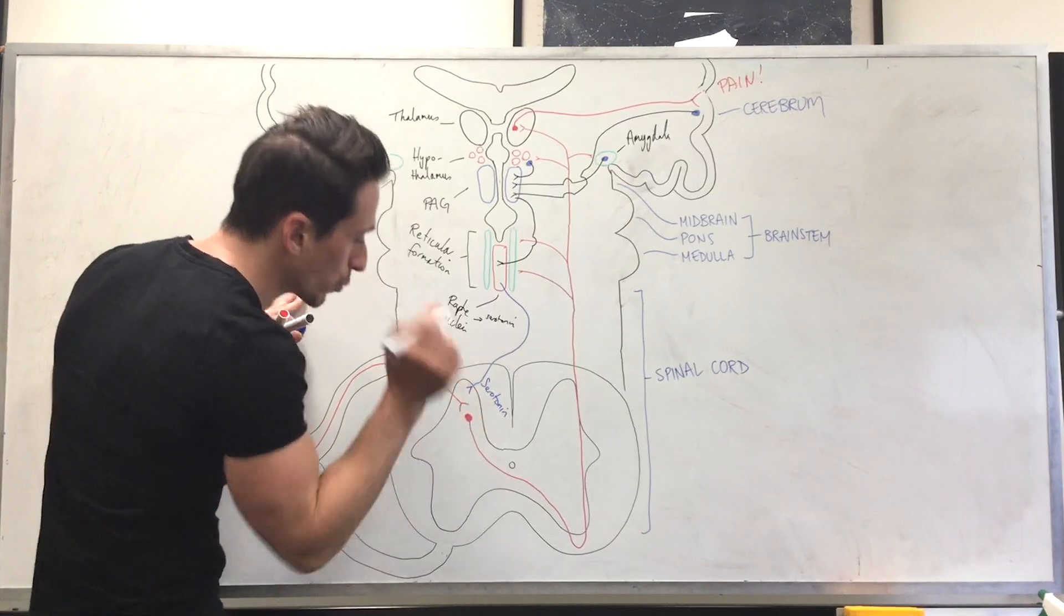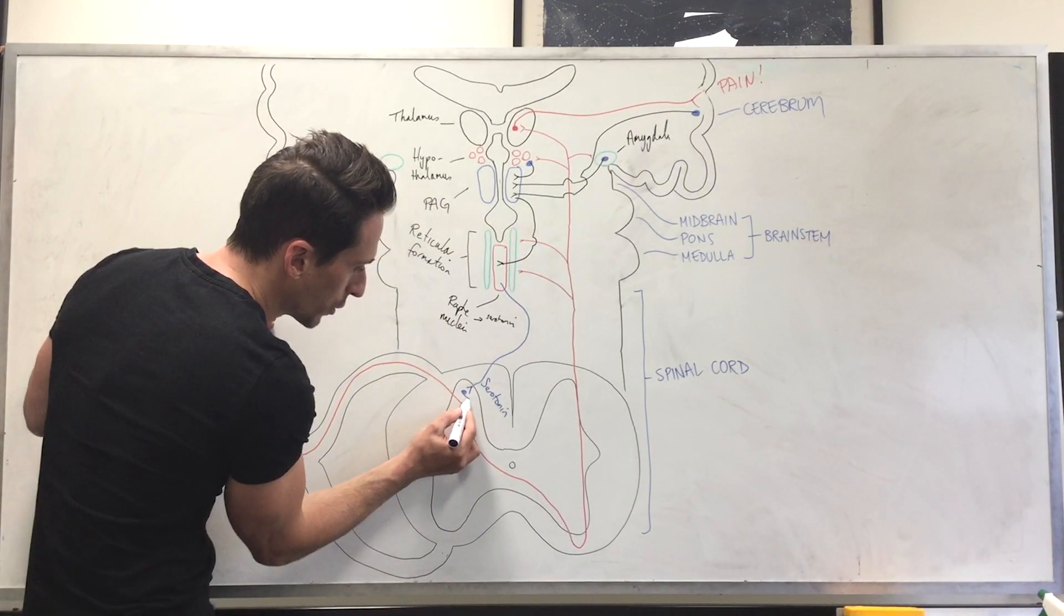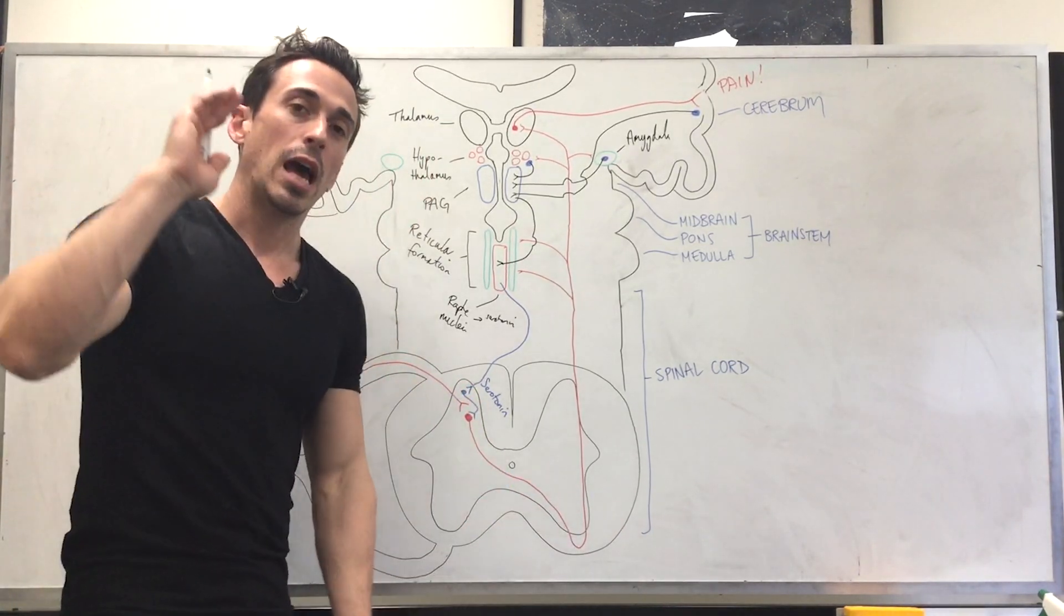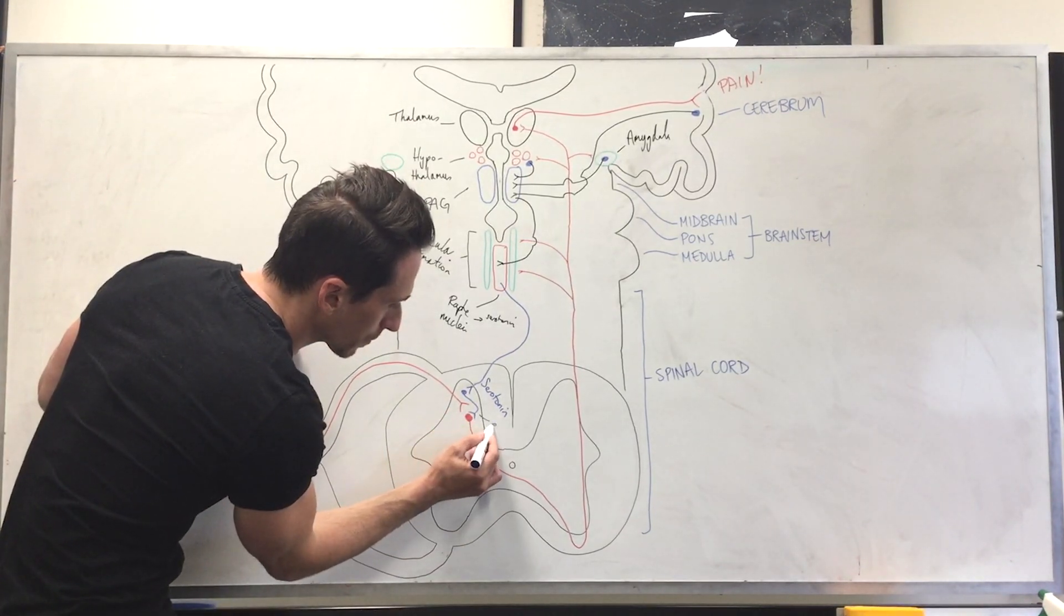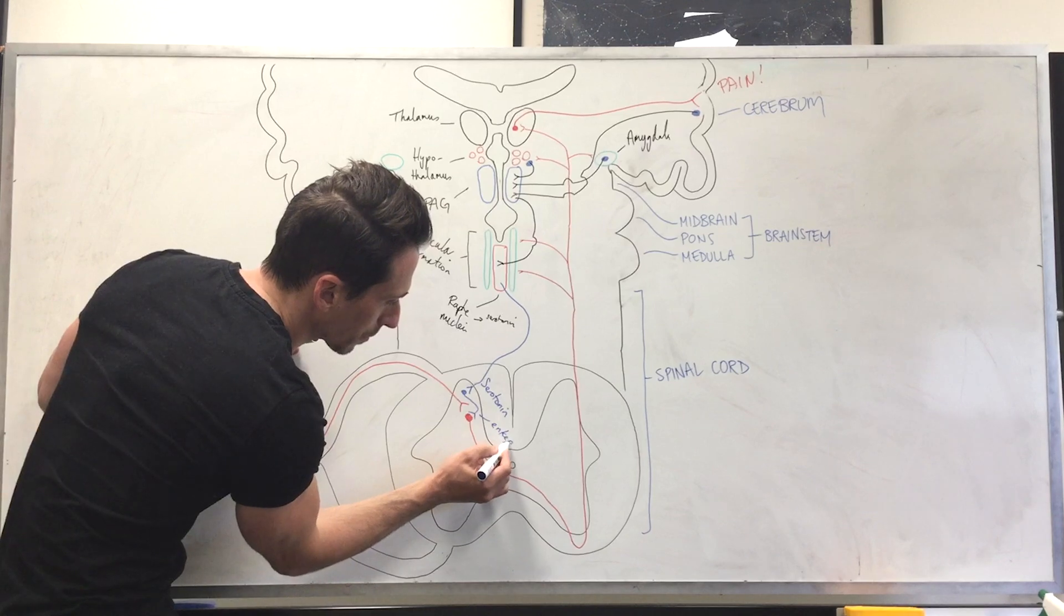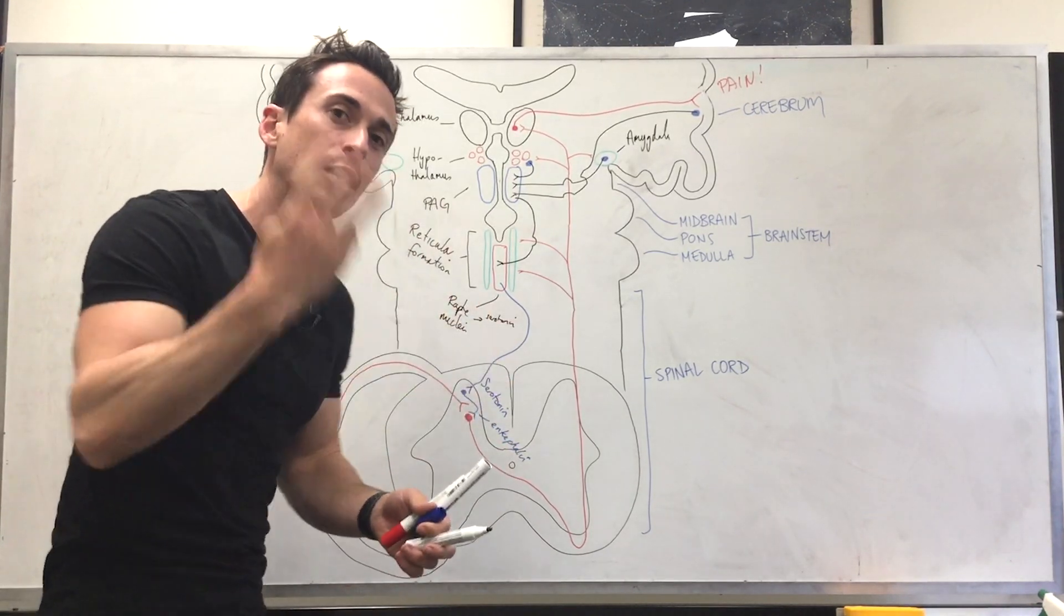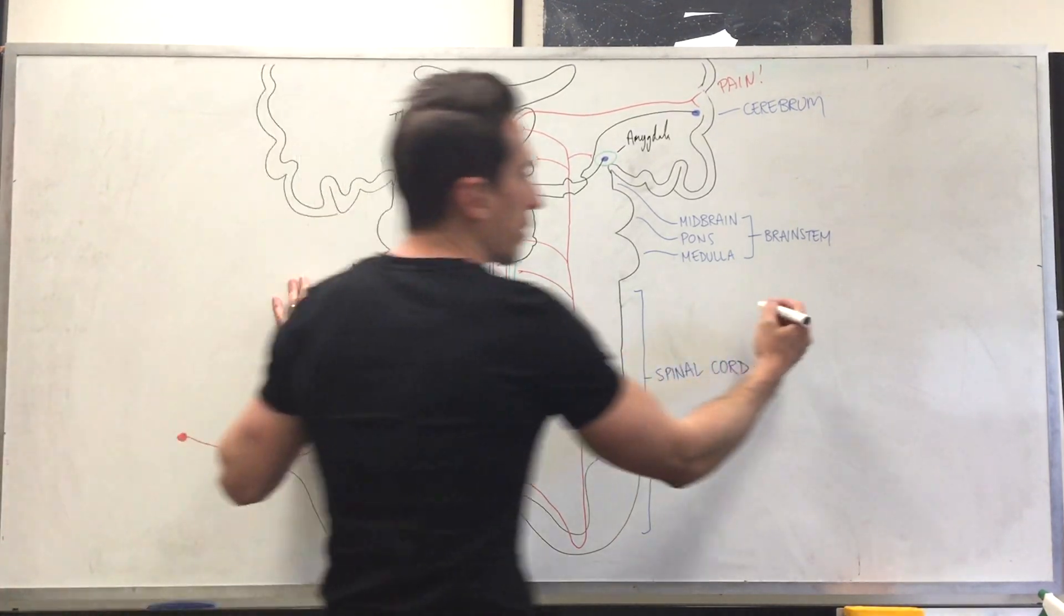It will synapse with another neuron, which then synapses with this secondary pain neuron. Now, this other neuron is a neuron that produces enkephalin. Now, enkephalin is one of the three endogenous opioids, pain relief chemicals that we release. What are the three?